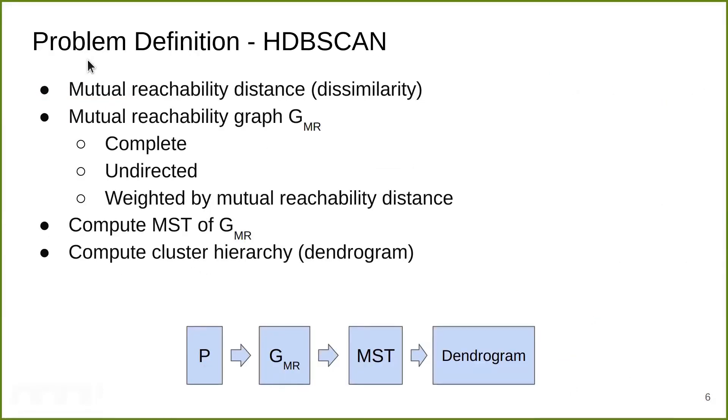Here's the problem definition of HDBSCAN. Like other hierarchical clustering problems, first we need a measure of dissimilarity between any pair of objects. For HDBSCAN, this is called the mutual reachability distance. With the mutual reachability distance, we construct a complete undirected graph, where we add one edge between every pair of objects weighted by the dissimilarity measure. Then with this graph, we compute its MST. And from the MST, we compute the dendrogram, which is the cluster hierarchy.